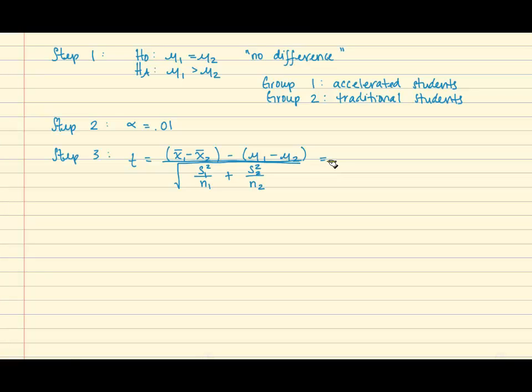Once we plug in the values from the scenario we obtain the following. And for mu1 minus mu2, because there is no difference, that will be 0. After computing the math we obtain a test statistic of 7.77.